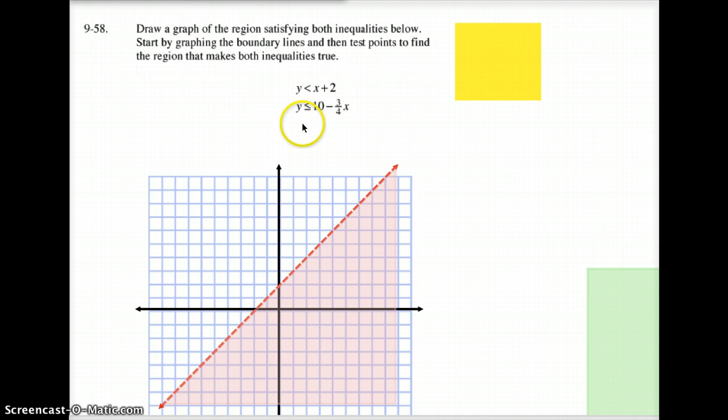The second one, y is less than or equal to 10 minus three-fourths x. I don't like this because it's not in slope-intercept form. Let's reverse these: the slope is negative three-fourths x and the y-intercept is positive 10. So it starts up here, goes down 3 over 4. Since y is less than, we shade below it.